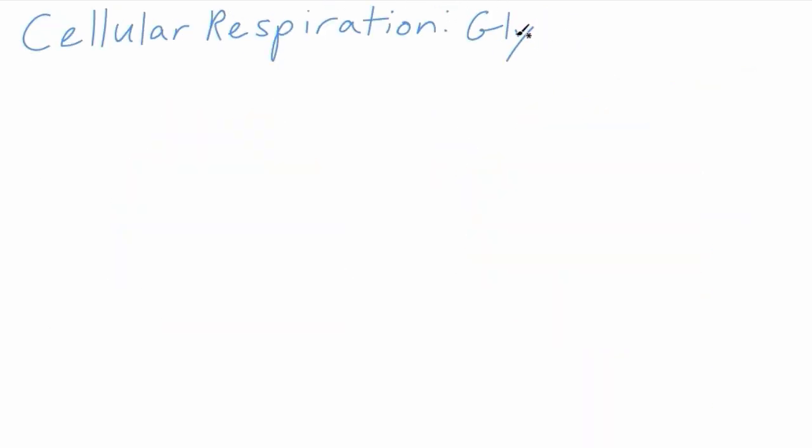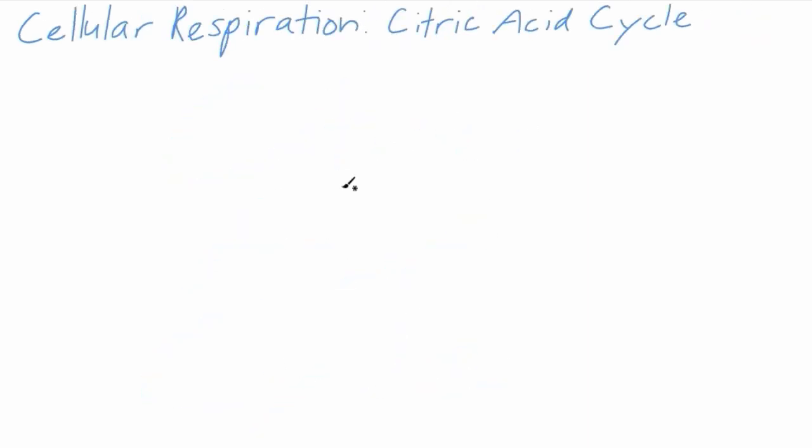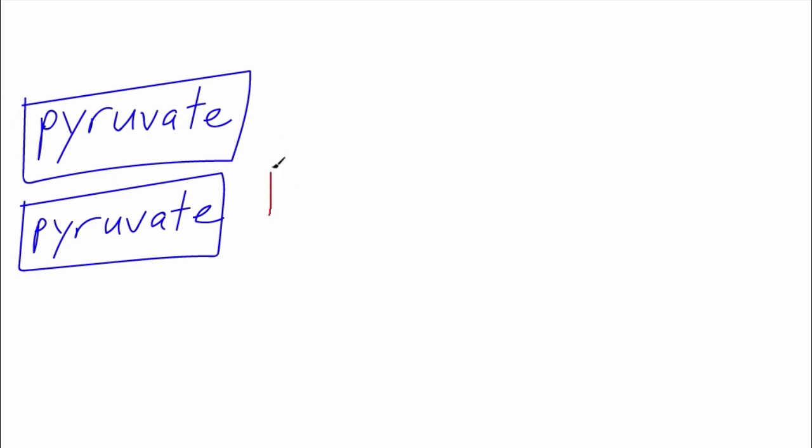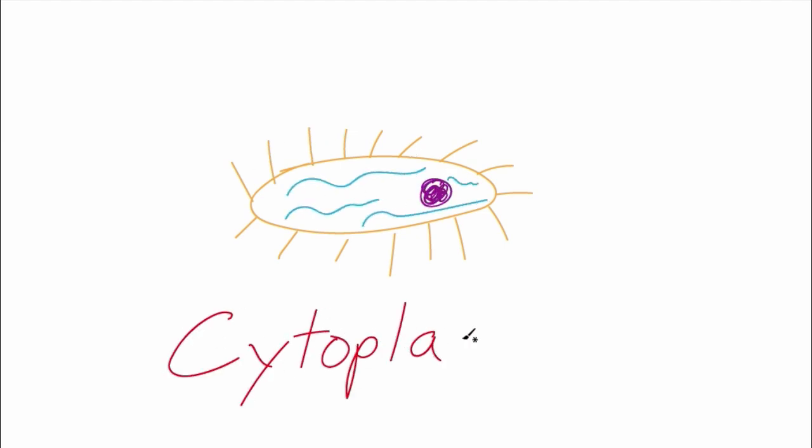The next step of cellular respiration is the citric acid cycle. This step takes place in the mitochondria. The mitochondria are organelles known as the powerhouses of the cell because they transform the pyruvates into ATP, a usable form of energy. If the cell does not have mitochondria, like in single-celled organisms such as bacteria, this next step occurs in the cytoplasm.